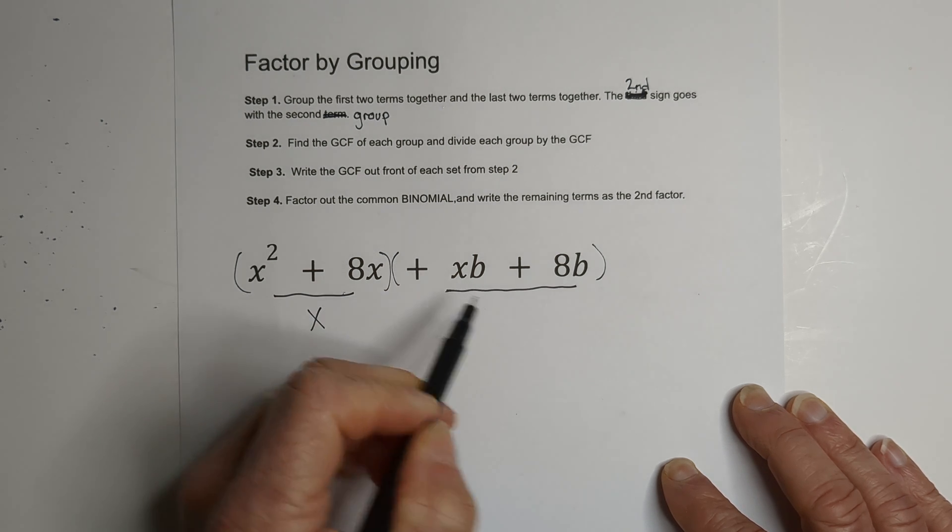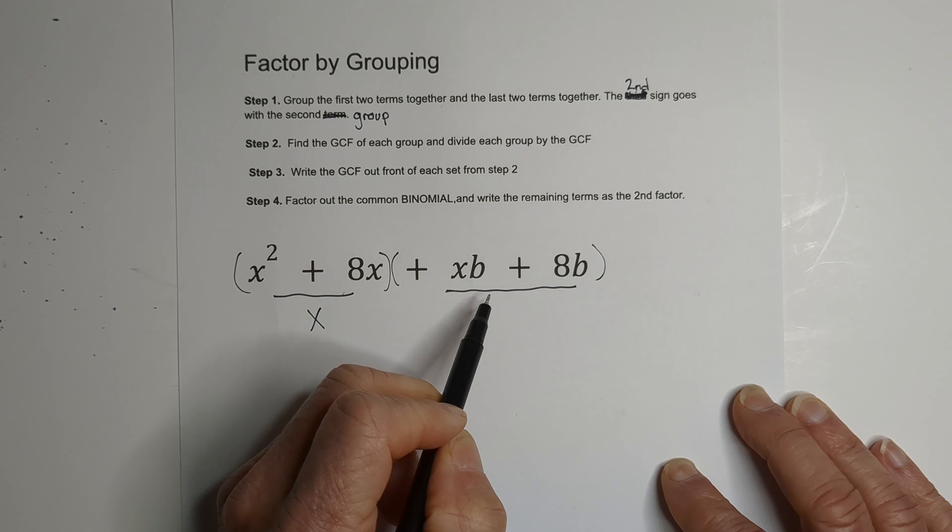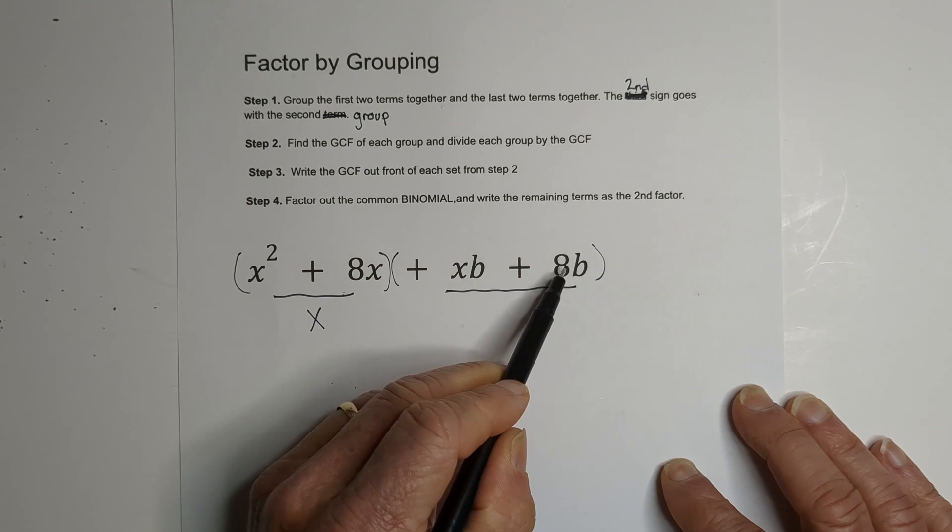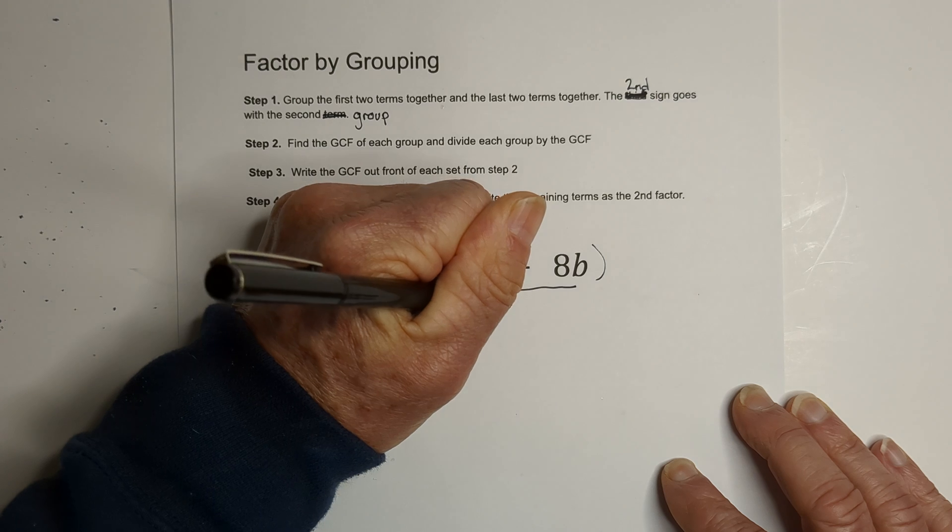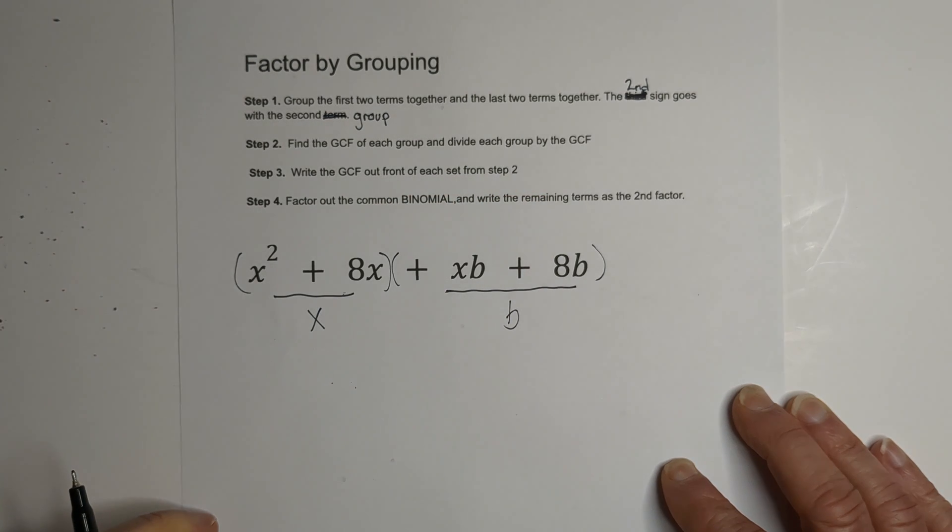Again, this comes into play when you have a negative. So let's see what we have. We don't have a constant. We have b and b common in there, both to the first power. So there we go. So now we have our GCFs.